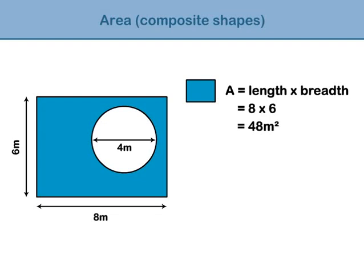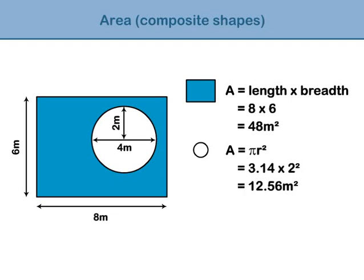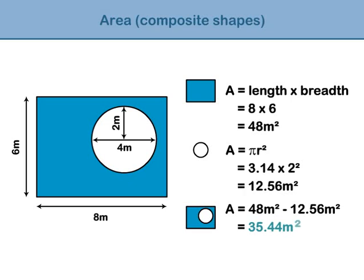Next, we need to find the area of the circle. The diameter of the circle is 4 metres, so the radius is 2 metres. Use the formula: area equals pi r squared, which is 3.14 times 2 times 2, giving an answer of 12.56 metres squared. To get the area of the shaded part of the shape, we need to subtract the area of the circle from the area of the rectangle. 48 minus 12.56 equals 35.44 metres squared.